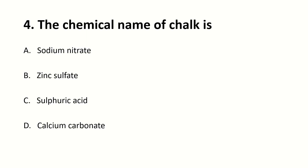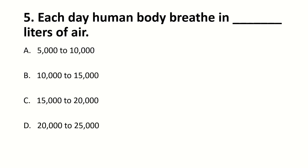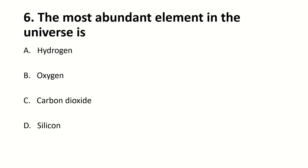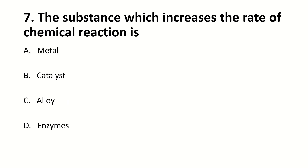The chemical name of chalk is dash. Right answer is C — calcium carbonate. Each day, the human body breathes in dash liters of air. Right answer is C — 15,000 to 20,000. The most important element in the universe is dash. Right answer is A — hydrogen.